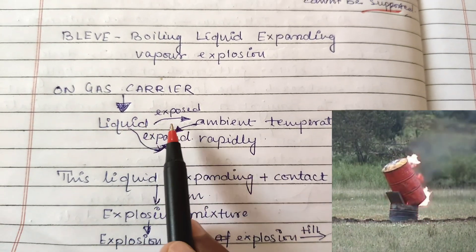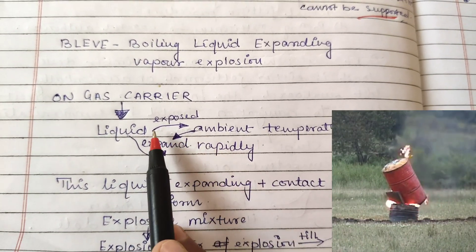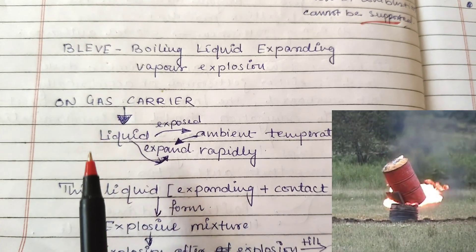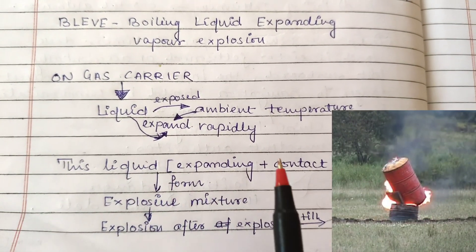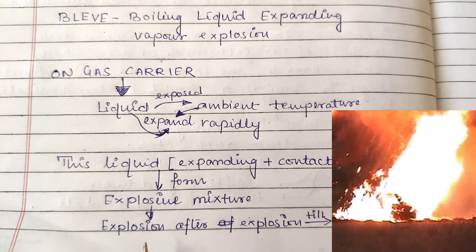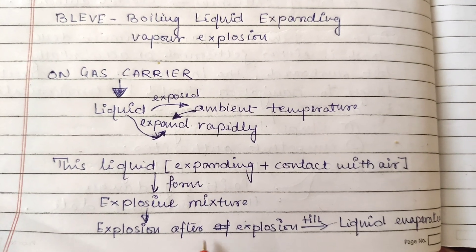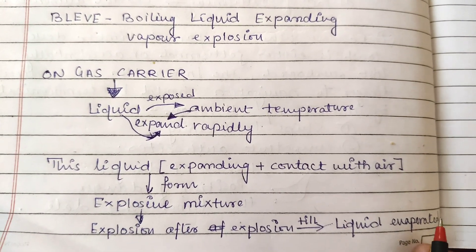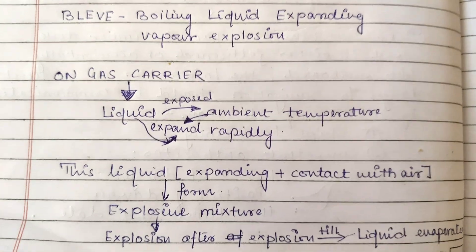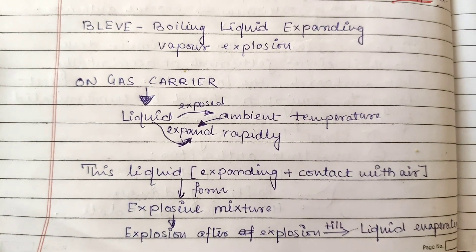On gas carriers, when there is a presence of liquid and it is exposed to ambient temperature, it expands rapidly. When this liquid comes in contact with air, it forms an explosive mixture, causing a series of explosions one after another until the liquid which has expanded rapidly fully evaporates. That is the meaning of Boiling Liquid Expanding Vapor Explosion — a very important term that you need to know.